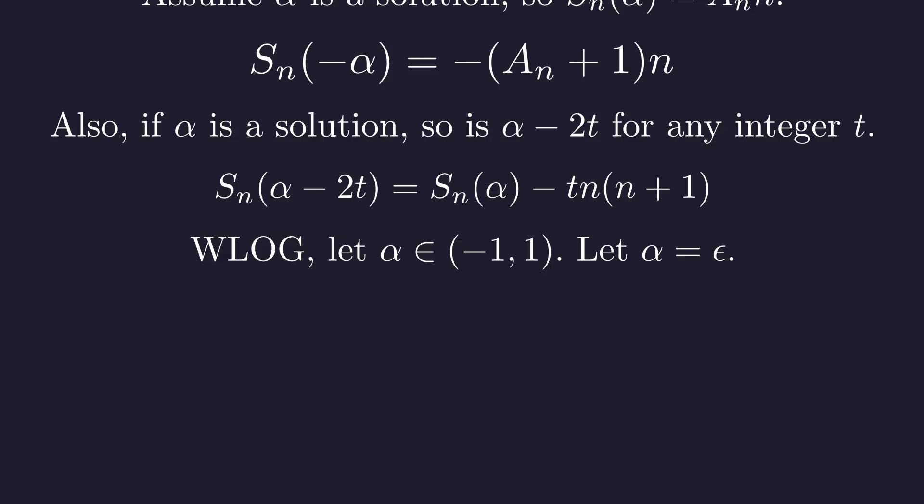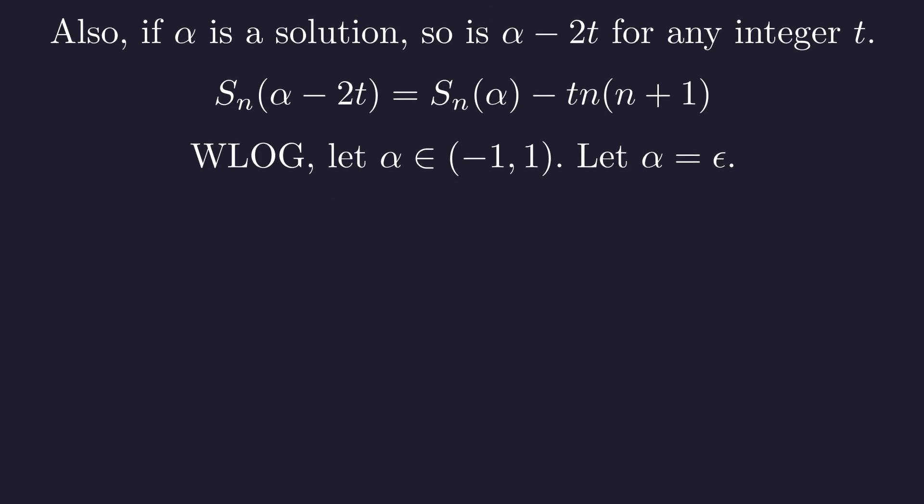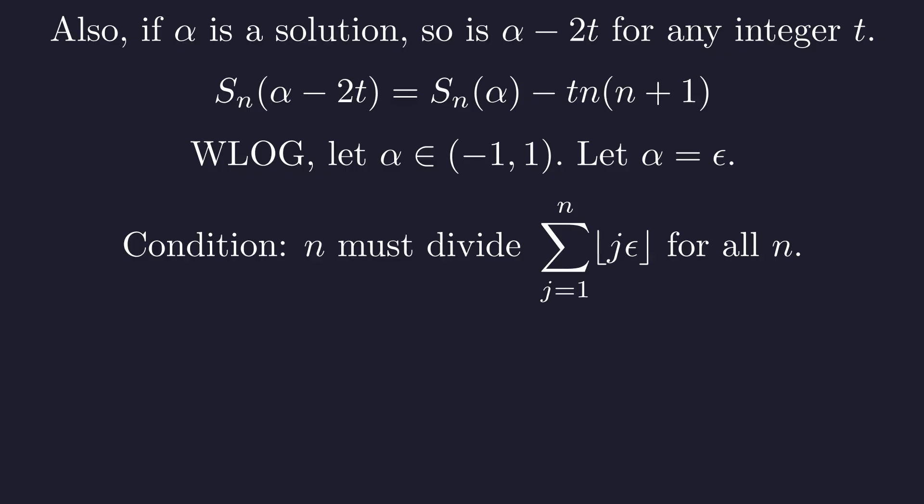These symmetries mean we can, without loss of generality, just focus on an alpha between negative 1 and 1. If we find no solutions here, there are no irrational solutions anywhere. Let's call this value epsilon. The problem reduces to this condition on epsilon, and because of the symmetry with its negative, we can just analyze the case where epsilon is in the interval from 0 to 1.